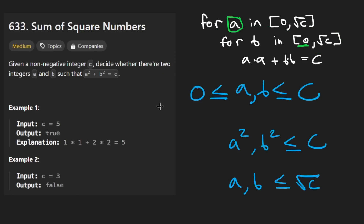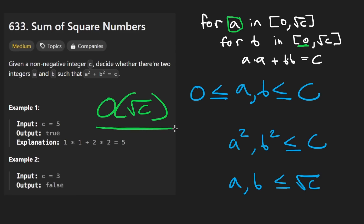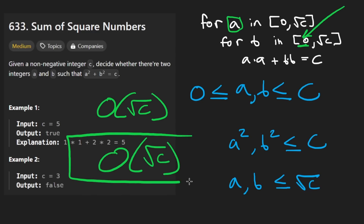This way, we can get the time complexity down to one loop — overall big O of square root of c. That does require extra space: we need to take every number from zero to the square root of c, square it, and add it to a hash set, so the space complexity is also square root of c. Let me code this solution up for you right now.